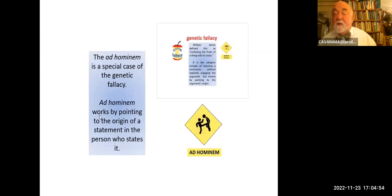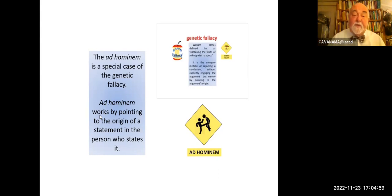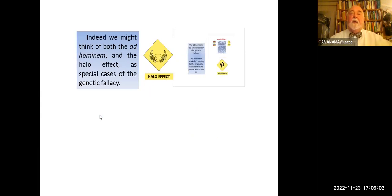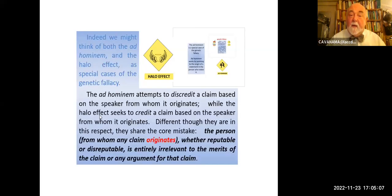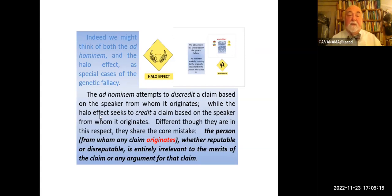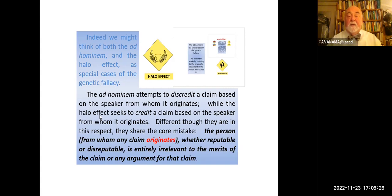We can think of the ad hominem as a special case of the genetic fallacy, because the ad hominem works by pointing to the origin of a statement in the person. Indeed, we might think of both the ad hominem and the halo effect as special cases of the genetic fallacy. The ad hominem attempts to discredit a claim against the speaker from whom it originates, while the halo effect seeks to credit a claim based on the speaker from whom it originates. Different though they are in this respect, they share the same core mistake. The person from whom any claim originated, whether reputable or disreputable, is entirely irrelevant to the merits of the claim or any argument for that claim.